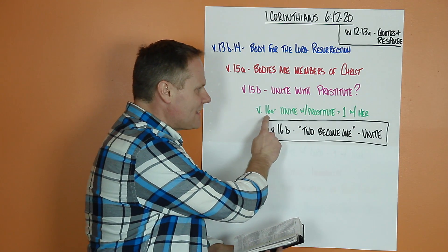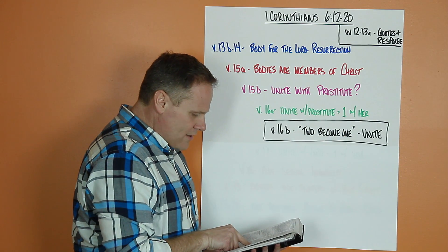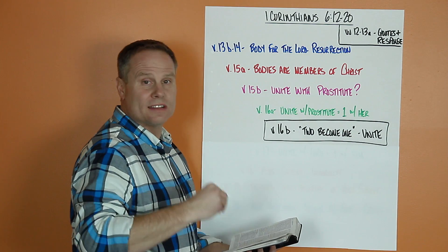In 16a, he emphasizes when you unite with a prostitute, you're one with her. Do you not know that he who unites himself with a prostitute is one with her in body?